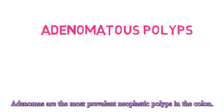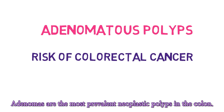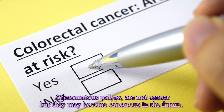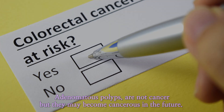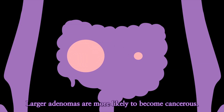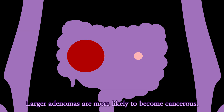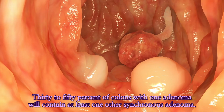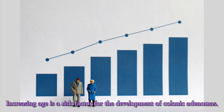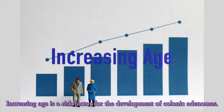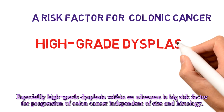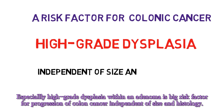Adenomatous polyps. Adenomas are the most prevalent neoplastic polyps in the colon. Adenomatous polyps are not cancer, but they may become cancerous in the future. Large adenomas are more likely to become cancerous. Thirty to fifty percent of colons with one adenoma will contain at least one other synchronous adenoma. Increasing age is a risk factor for the development of colonic adenomas. Especially high-grade dysplasia within an adenoma is a big risk factor for progression of colon cancer, independent of size and histology.